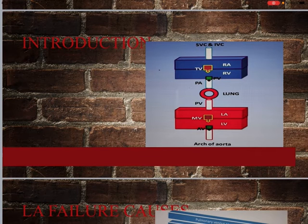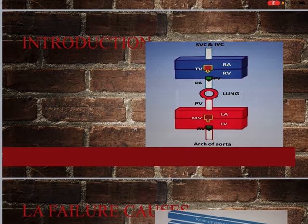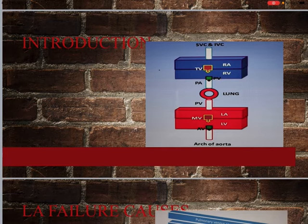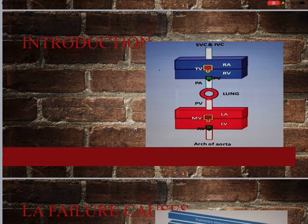In atrial fibrillation, regular impulses are not produced properly because the normal heartbeat is affected by the rapid electrical discharges produced in the already dilated and hypertrophied left atrium. As a result, cardiac output will ultimately get decreased.